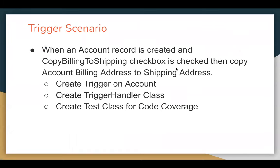Let's understand the requirement of a trigger scenario. When an account record is created and the copy billing to shipping checkbox is checked — this is a custom checkbox field we need to create on the account object — then we need to copy the account billing address to the shipping address. We need to create a trigger on account, then a trigger handler class, and then I will show how we can implement test code coverage with the help of a test class.